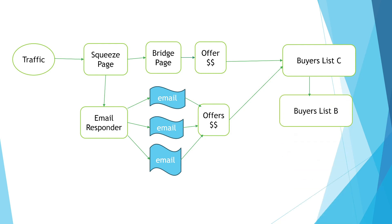In buyers list B, the traffic will get offers which are mid-ticket to high-ticket — mid-price to high-price. And when they buy, they'll be moved into buyers list A. When the traffic moves into buyers list A, they will be sent high-ticket offers, otherwise known as high-priced items. That is what the passive income profit system looks like.